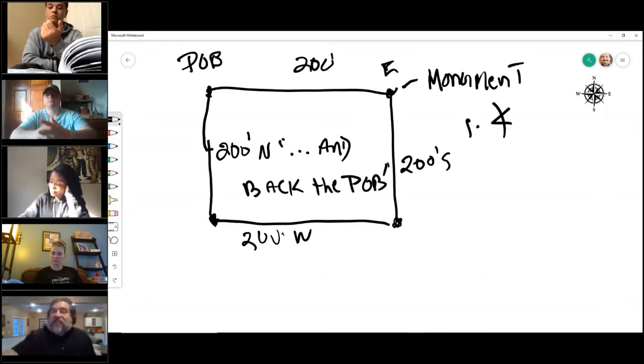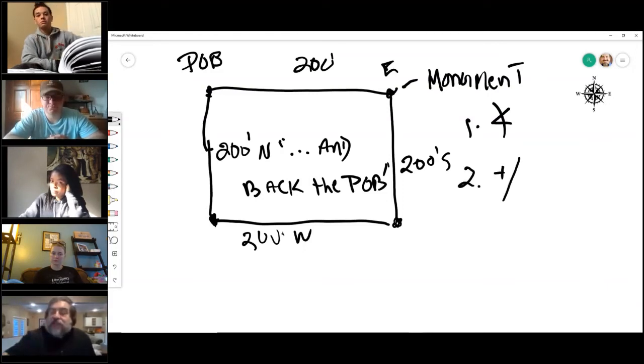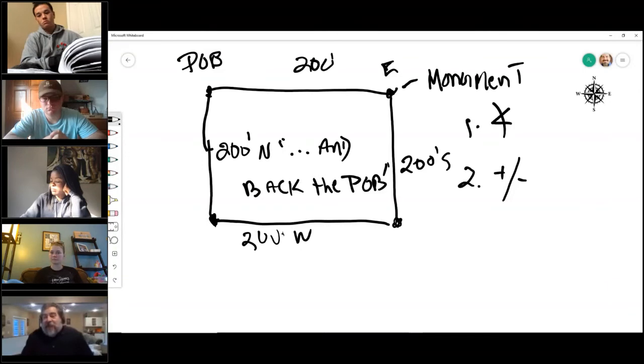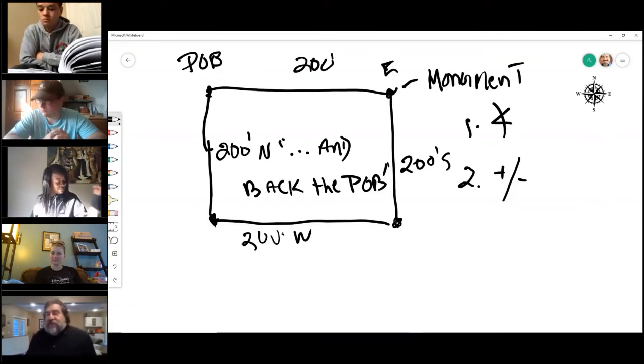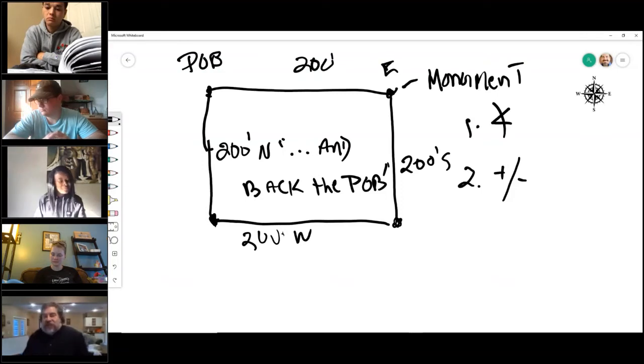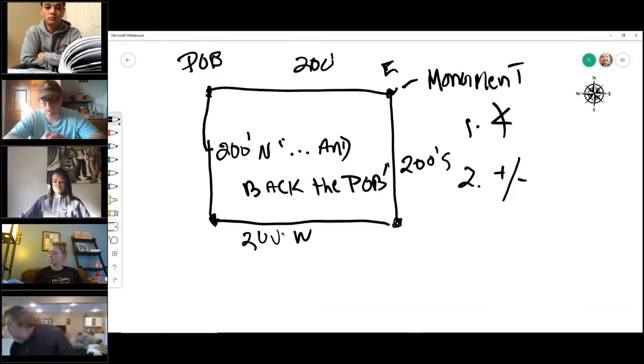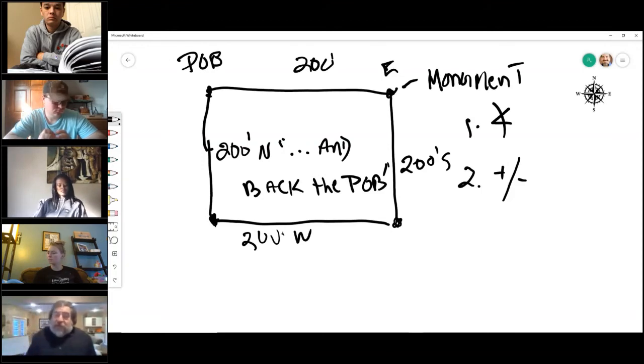And the second thing it has is this very technical plus or minus. Plus or minus. So it allows for a plus or minus change in the property. Now what I want to do—in the book there is a figure, figure 3.1 or 5.1, depending on where you're looking. Now it's figure 5.1.